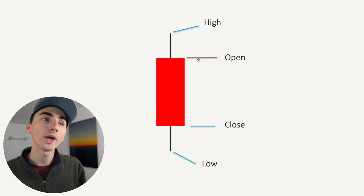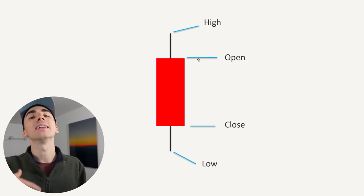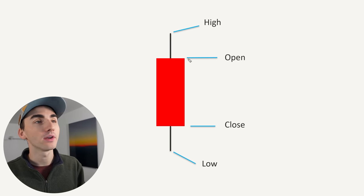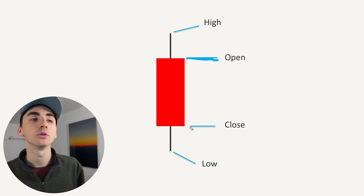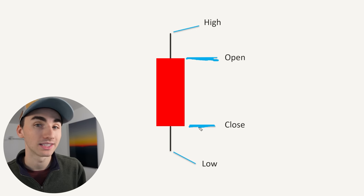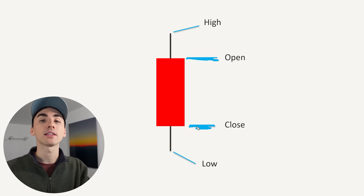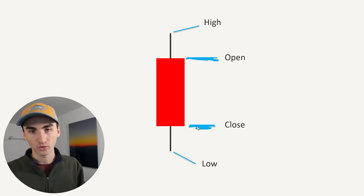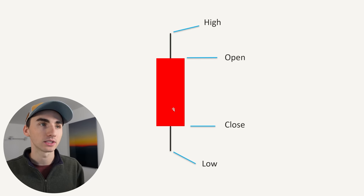If you switch that to red, that means it is a bearish candlestick. It opened up at the high of the body and then closed towards the low of the body, meaning the price went down overall over this candlestick's forming.